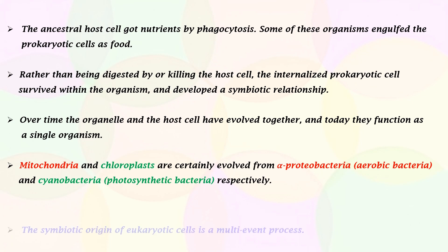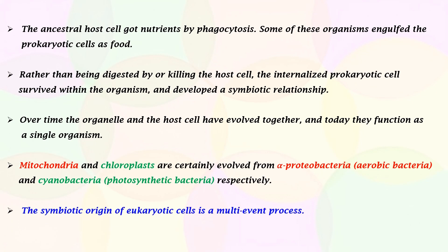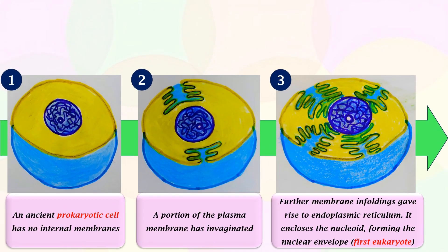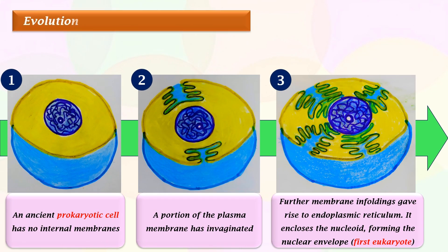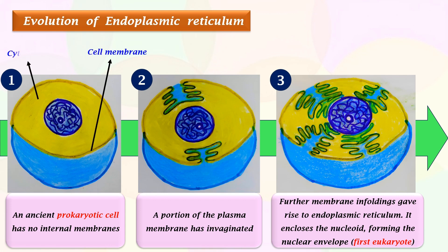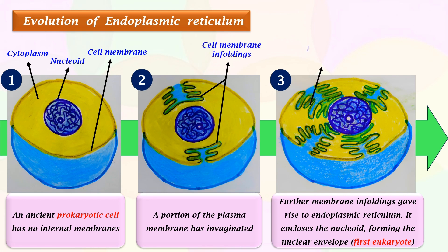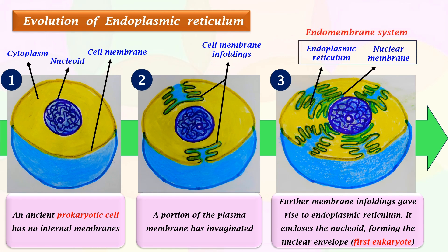The symbiotic origin of eukaryotic cells is a multi-event process. Before proceeding to endosymbiotic theory, let's talk about the hypothetical evolution of endoplasmic reticulum. This is an ancient prokaryotic cell with no internal membranes — this is the cell membrane, cytoplasm, and nucleoid. A small portion of the plasma membrane has invaginated, which are called the cell membrane enfoldings. Further membrane enfoldings began the formation of endoplasmic reticulum, which encloses the nucleoid, thereby forming the nuclear envelope. Endoplasmic reticulum and nuclear membrane together constitute the endomembrane system. This is called the first eukaryotic cell.